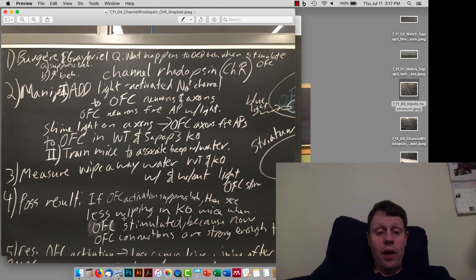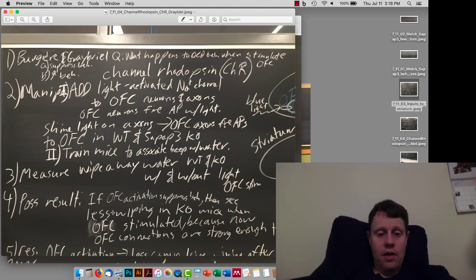There are a few possible results, but the one that they saw and the one that we're going to focus on is if activating orbital frontal cortex inputs to the striatum, if activating orbital frontal cortex synapses to the striatum causes a suppression of behavior, then we will see less wiping in the knockout mice.